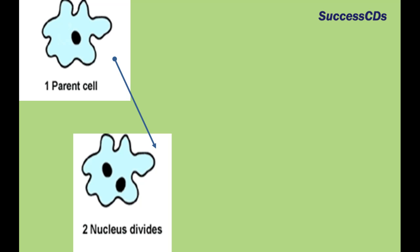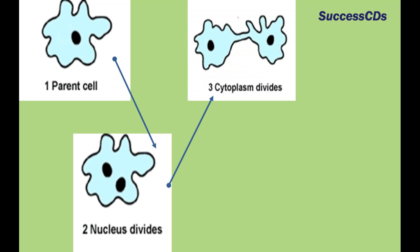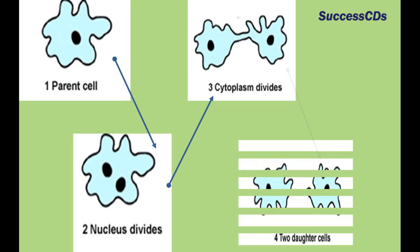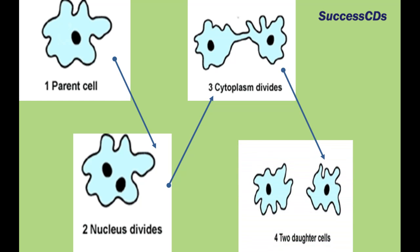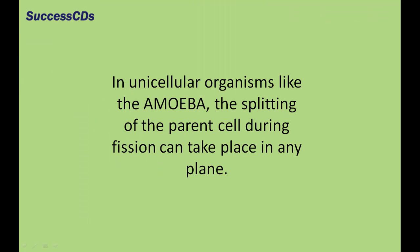After that, the cytoplasm of amoeba divides into two parts, one part around each nucleus. In this way, one parent amoeba divides to form two smaller amoeba called daughter amoeba. In unicellular organisms like the amoeba, the splitting of the parent cell during fission can take place in any plane.